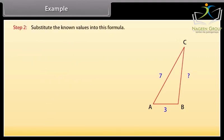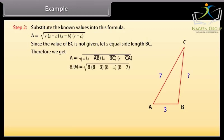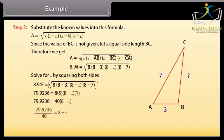Step 2: substitute the known values into the formula A = √(S × (S−A) × (S−B) × (S−C)). Since the value of BC is not given, let X be the length BC. By substituting the values we get 8.94 = √(8 × (8−3) × (8−X) × (8−7)). Squaring both sides and solving for X, we get X approximately equal to 6.0.